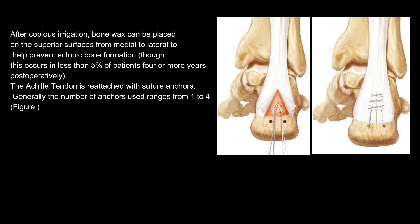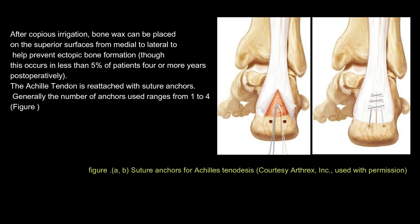After copious irrigation, bone wax can be placed on the superior surfaces from medial to lateral to help prevent ectopic bone formation, though this occurs in less than 5% of patients four or more years postoperatively. The Achilles tendon is reattached with suture anchors. Generally the number of anchors used ranges from 1 to 4. Suture anchors for Achilles tenodesis, courtesy Arthrex, Inc., used with permission.